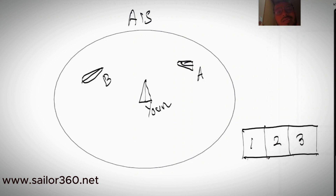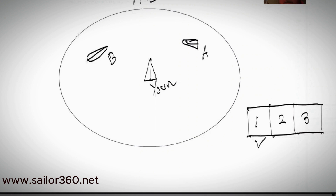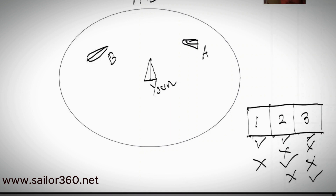With three vessels, there are three divisions of exactly similar size — each vessel gets the same time slot. When vessel one sends, vessels two and three stop. When vessel two sends, vessels one and three stop. When vessel three sends, vessels one and two stop.